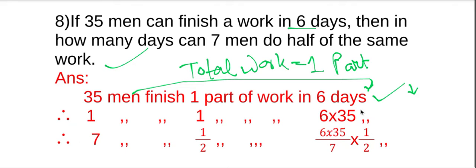One man can finish one part of the same work in 6 times 35. Then seven men - the number of men increases. So seven men can finish half part of the work in 6 times 35 divided by 7, times half.